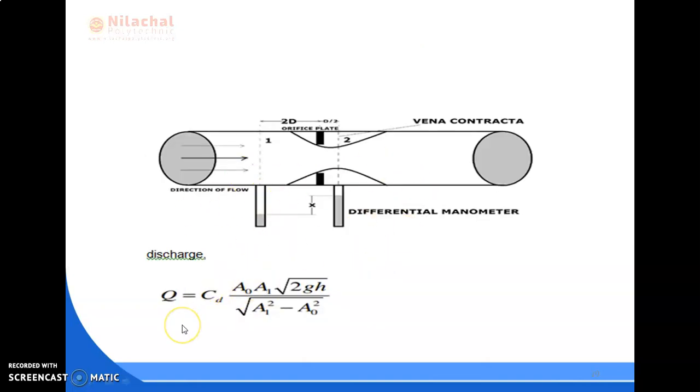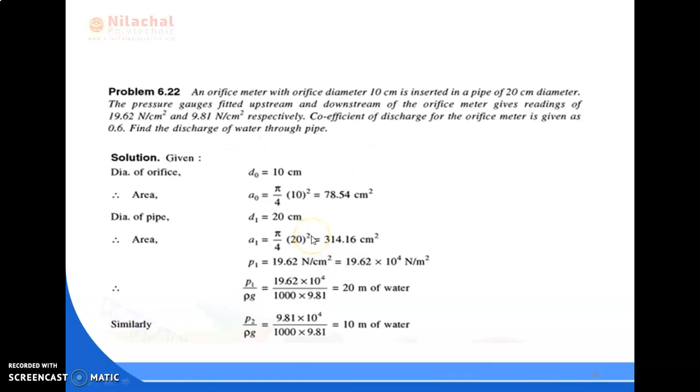This figure shows the orifice and the discharge formula for calculation is Q = Cd × A₀A₁ × √(2gH) / √(A₁² - A₀²). This is the formula for calculation through the orifice meter. Let's solve a problem.